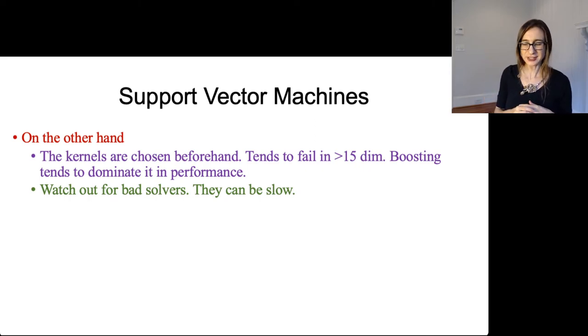And so it tends to fail in larger numbers of dimensions and tends to get dominated by methods like boosting where things are adaptive. Boosting is dividing up the space in an adaptive way so that the distance between data points is adapted to the space.